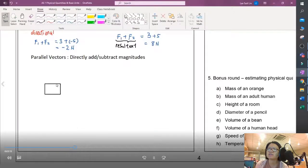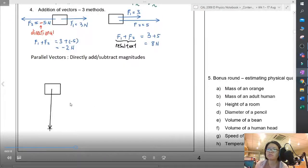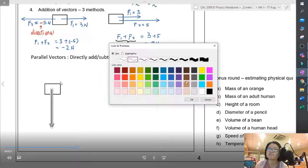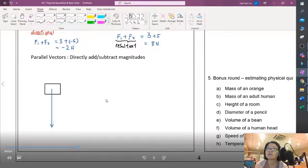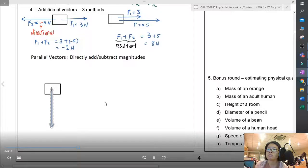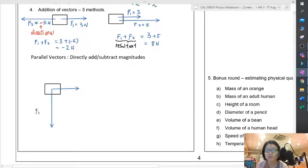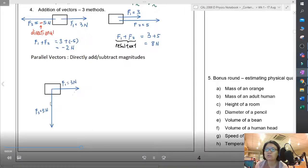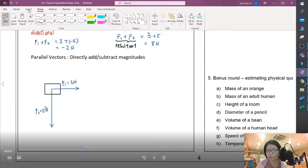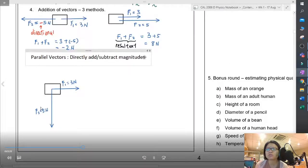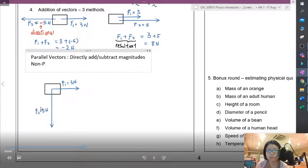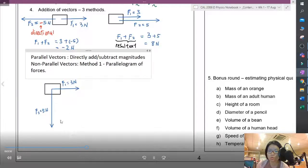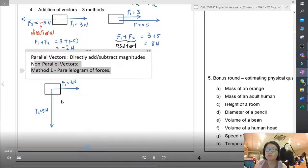For example, you have a vector pointing downwards. Let's say the 5 N, I change direction or I point it downwards. And then the 3 N, I keep it in the same direction. We pull downwards by 5 N, we pull to the right by 3 N. So where is the resultant? Let's think a bit.